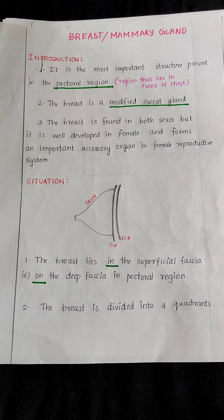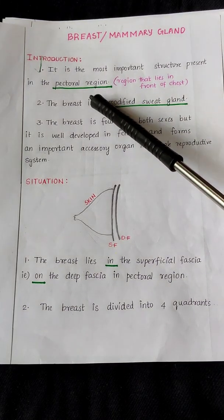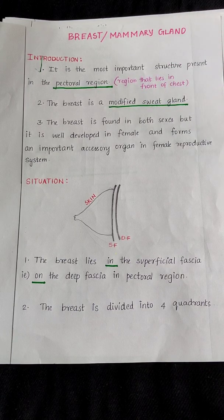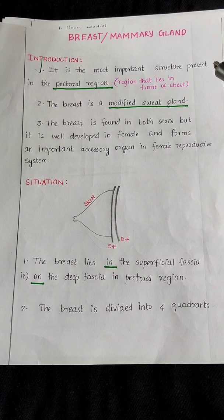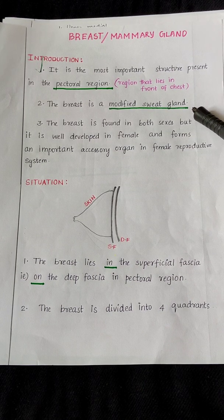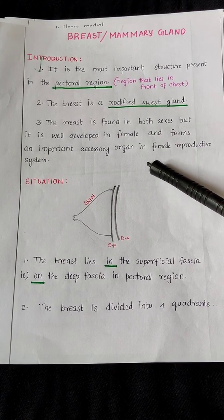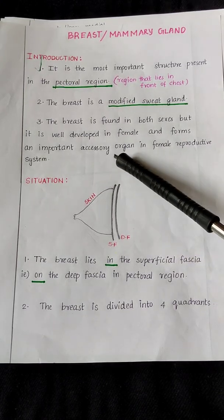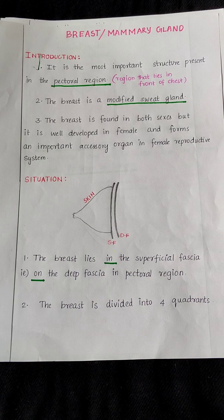First, the introduction of the breast. There are three key points: first, it is an important structure present in the pectoral region, which is the region that lies in front of the chest. Second, the breast is a modified sweat gland. Third, it is formed in both sexes but is well developed in females and forms an important accessory organ in the female reproductive system.